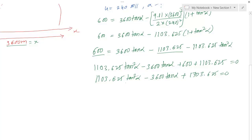On solving the above equation using the ES-991 Plus scientific calculator, the values are tan alpha equals 0.574 and 2.688.